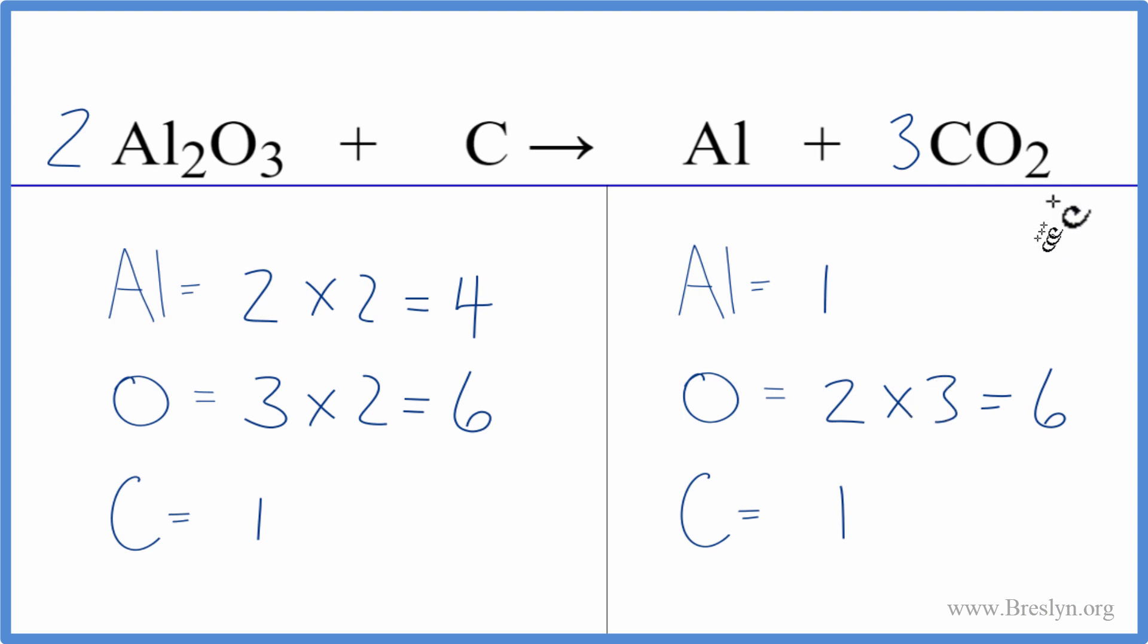So now I've balanced the oxygens and then one carbon times the three, that'll give me three carbons, but I'm pretty much done now because I have one carbon here and three here. I'll put a three in front of the carbon, one times three. That's balanced.